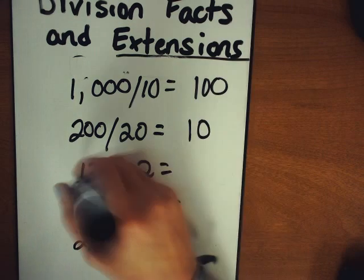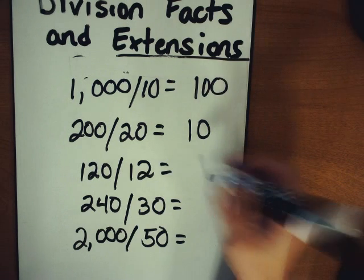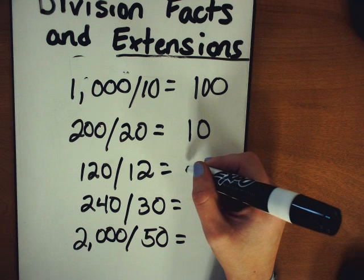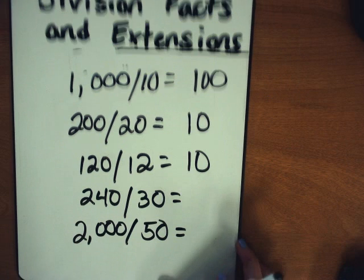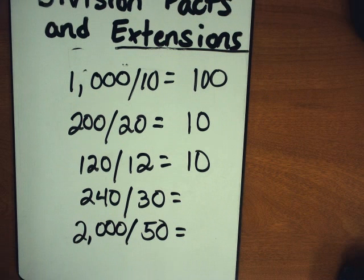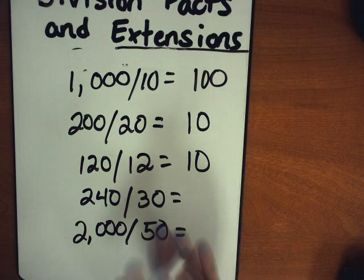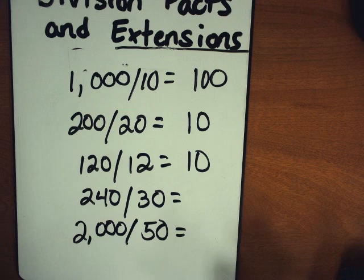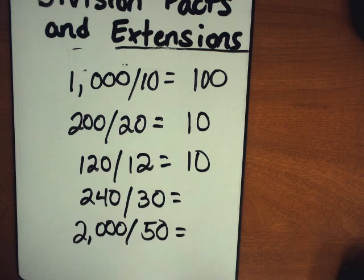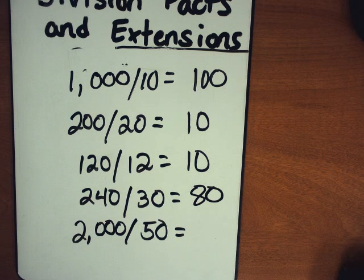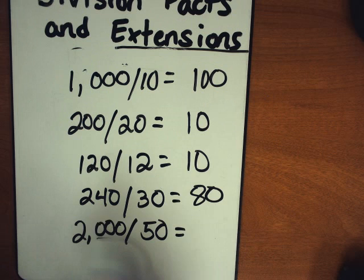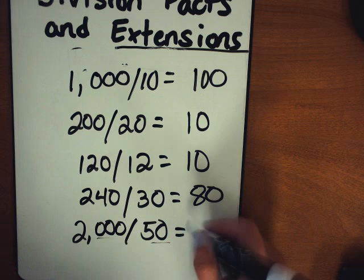12 times what equals 120, 12 times 10. 240 divided by 30 or 30 times what equals 240. I know 3 times 8 is 24, so 80. And then 2000 divided by 50, if I did 20 divided by 5, that's my basic fact. And I'm going to do 2000 with three zeros and 50 would equal 40.